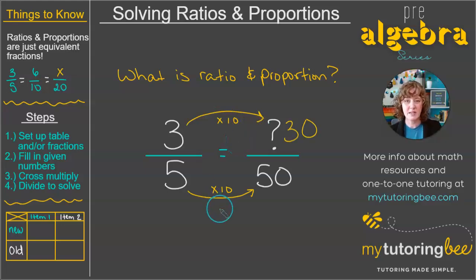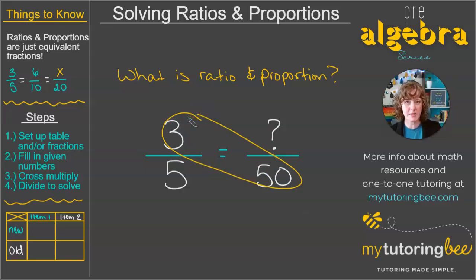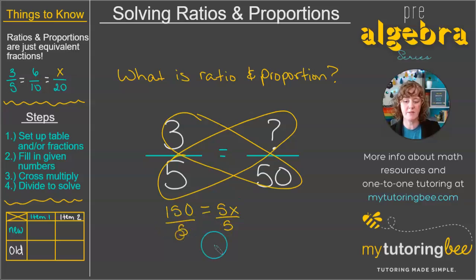Now there is another way that we can solve these, and it's especially useful if we don't have a direct multiplication that we can use to get from one fraction to the other, and that is cross-multiplying. So we would multiply diagonally. 3 times 50 gives us 150, and then 5 times our unknown number would go on the other side of the equation. So for this, I'm going to write 5x. I'm going to use that x as a variable, an unknown number. Then we would divide both sides by 5, and we would get x equals 30. So you see in both methods that we get the same answer.